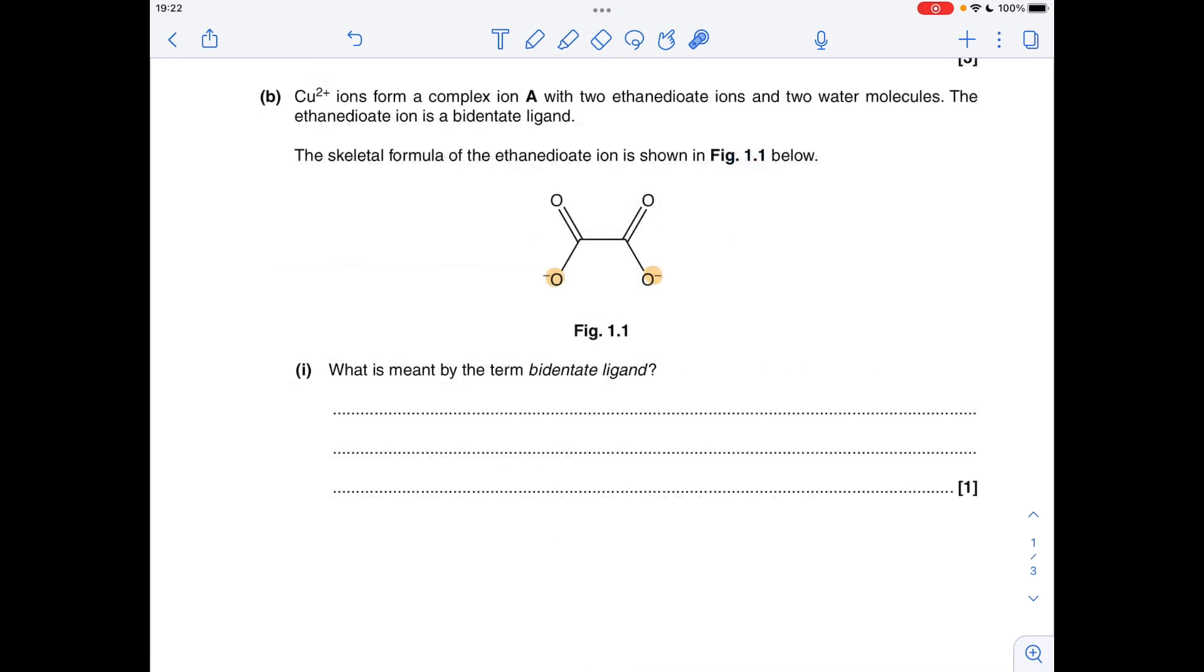So part B now, you can see I've highlighted the O-s. So why is this a bidentate ligand? The O- ions can donate a pair of electrons each to the central transition metal ion, so obviously it's got two ways to do that, hence it's bidentate. So in words, they'll be after something like this: it donates two pairs of electrons to a metal ion. This is really important to say as well, forming two coordinate bonds with the metal ion.